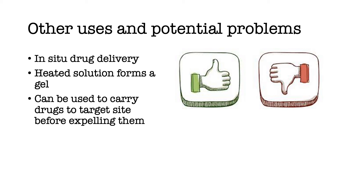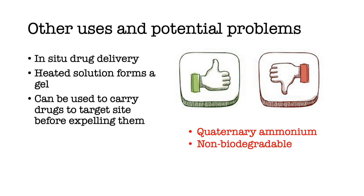However, there are still some challenges to overcome for the use of poly-N-isopropylacrylamide. These include the fact that the quaternary ammonium in the polymer means it has a certain level of cytotoxicity, hence the poly-N-isopropylacrylamide layer was not the one directly on the skin in our burn dressing. Poly-N-isopropylacrylamide is also non-biodegradable, and with our planet facing such huge plastic pollution, this alone could be a valid reason not to use it. Furthermore, poly-N-isopropylacrylamide has the ability to activate platelets in the body, which could lead to a higher risk of blood clots. So, there is work to be done in order to refine the properties of poly-N-isopropylacrylamide in order to make it safe and sustainable for use.